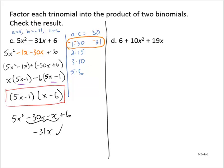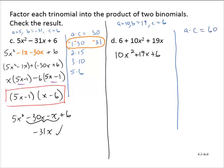Last example, d. We have 6 plus 10x squared plus 19x. First, rewrite this in descending order: 10x squared plus 19x plus 6. There's no common factor, so let's do some side work for the AC method. With a equal to 10, b equal to 19, and c equal to 6. A times c: 10 times 6 is 60. Factors of 60: 1 and 60, 2 and 30, 3 and 20, 4 and 15, 5 and 12, 6 and 10.